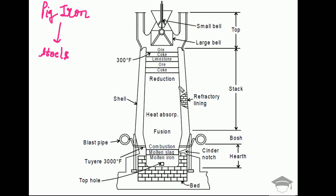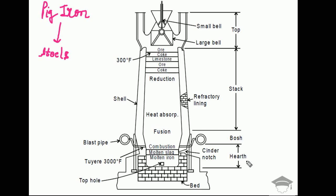The blast furnace is divided into four basic zones. From the bottom we have: hearth, then bosch, then stack, and then top. So the furnace is divided into four zones — top, stack, bosch, and hearth.